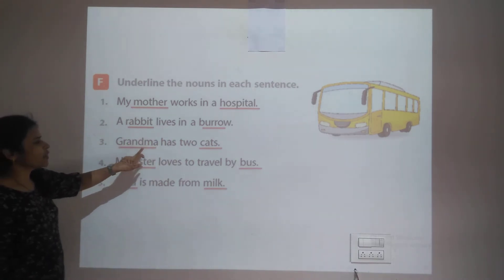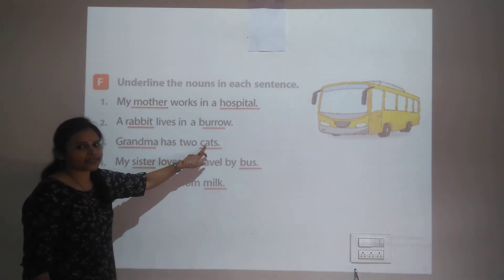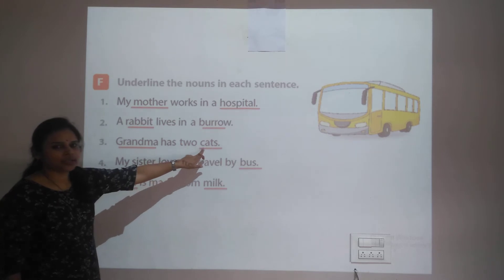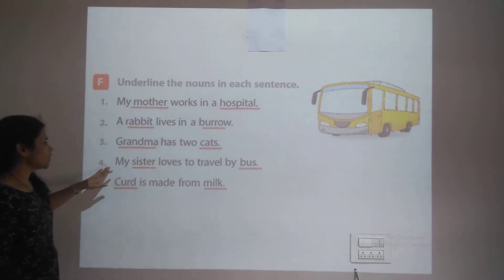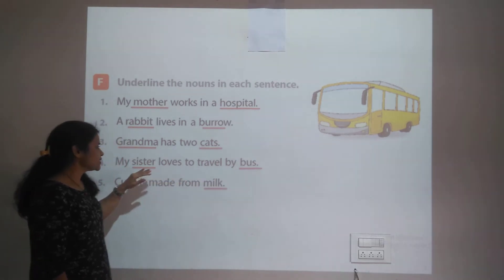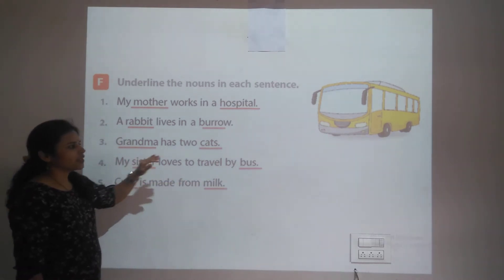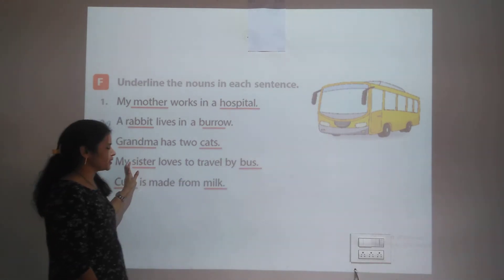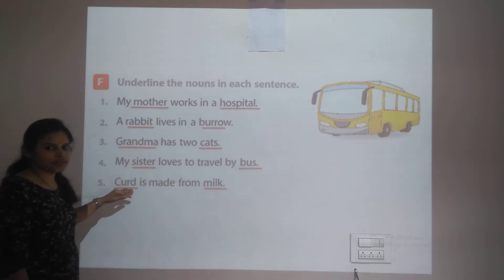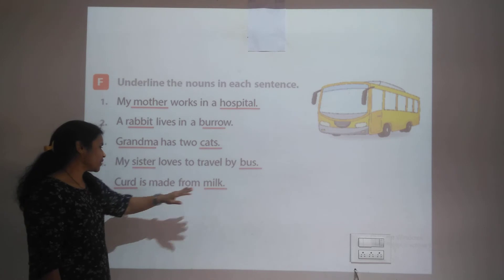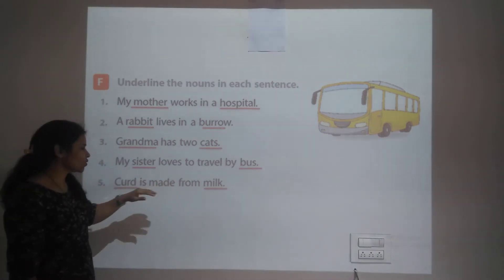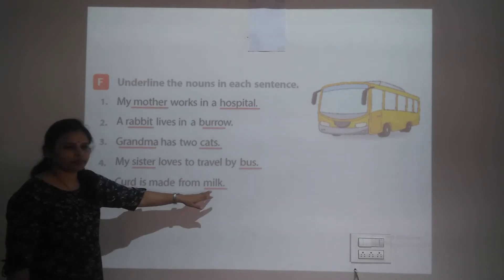Third sentence: Grandma has two cats. 'Grandma' and 'cats' are both nouns — underline both. Fourth sentence: My sister loves to travel by bus. 'Sister' and 'bus' are both nouns — underline both. Fifth sentence: Curd is made from milk. 'Curd' and 'milk' are the nouns — underline both.